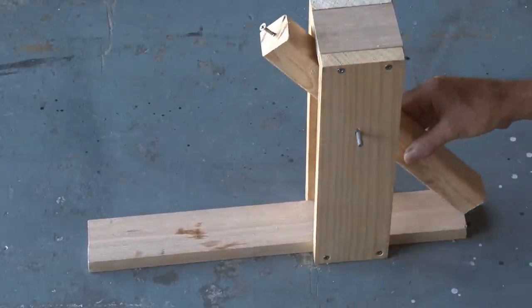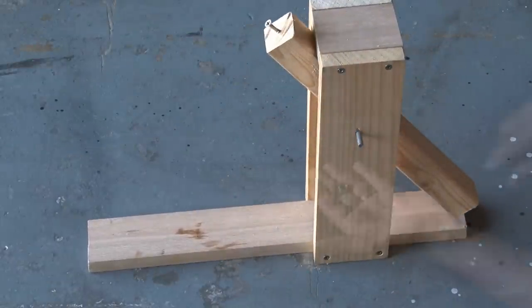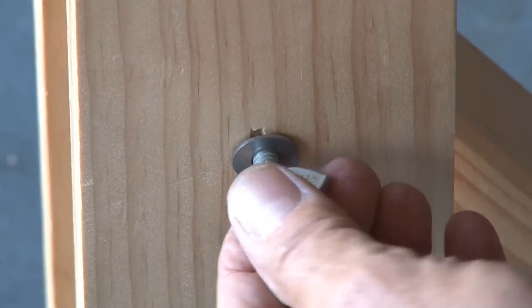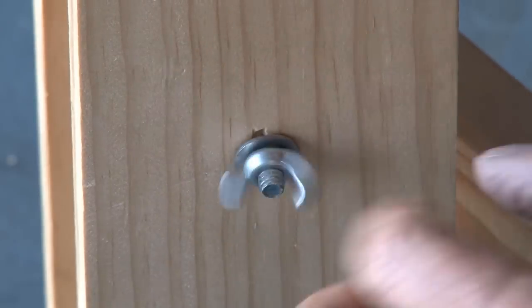So insert the threaded rod through the housing, through the hammer, and secure the one end with a washer and a nut, and secure the other end with the other washer and the wing nut.